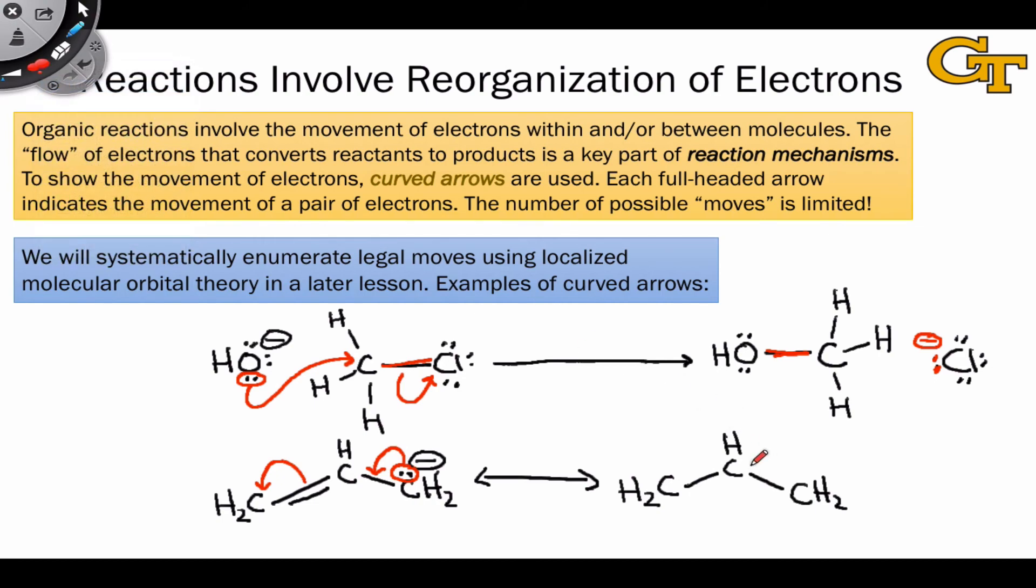The new resonance structure contains a pi bond between the central carbon and the right-hand carbon that is composed of the electrons that used to be in this lone pair in the original resonance form. The left-hand carbon bears a new lone pair here and a negative charge,